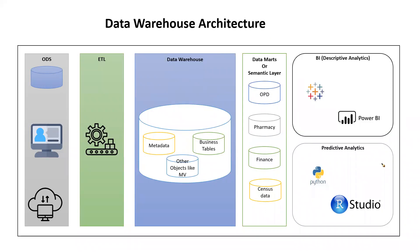To summarize the data warehouse architecture: ODS feeds into ETL, ETL loads the data warehouse, data marts are created from the warehouse for BI and reporting, and if predictions are needed, data goes into a predictive analytics layer.